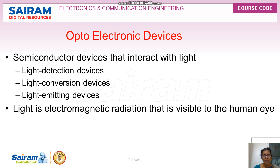Optoelectronic devices can be divided into three types: one is a light detection device, the second is a light conversion device, and the third is a light emitting device. Light is an electromagnetic radiation visible to the human eye, consisting of various spectra and different wavelengths. The wavelength determines both the energy and the color of the light.